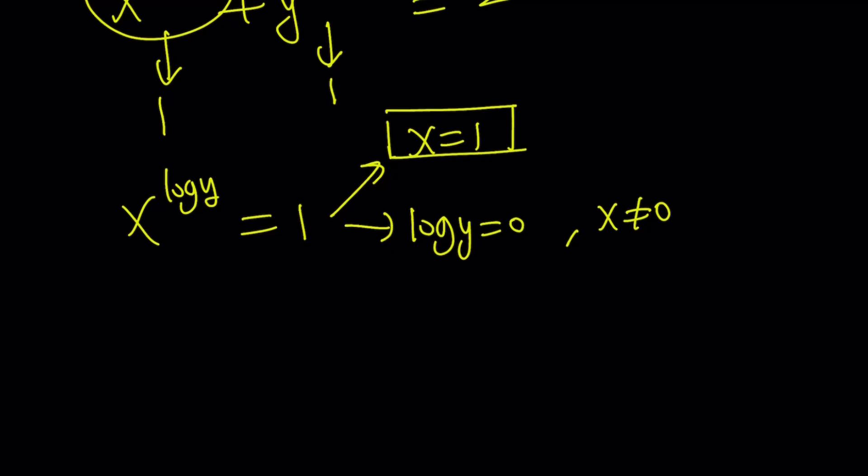But what about log y equals 0, right? If log y is equal to 0, this implies that y is equal to 1, right? And what does that give us?